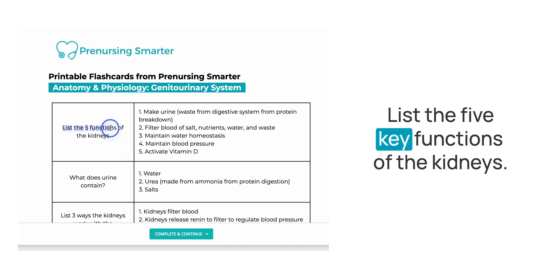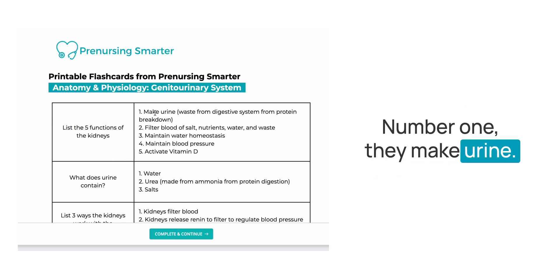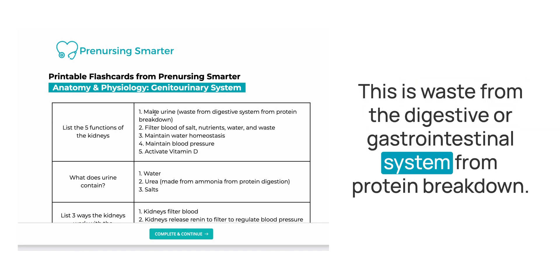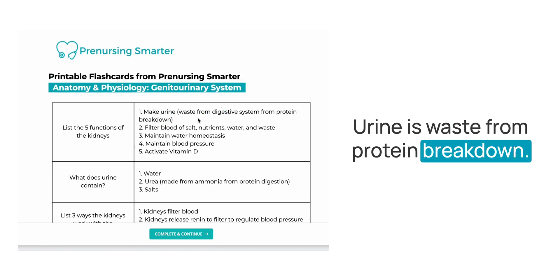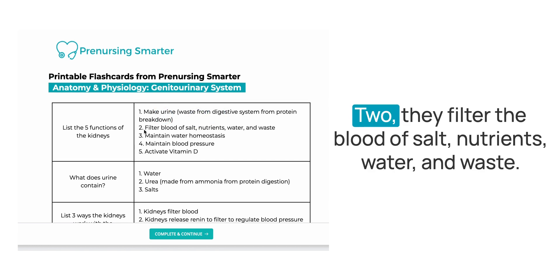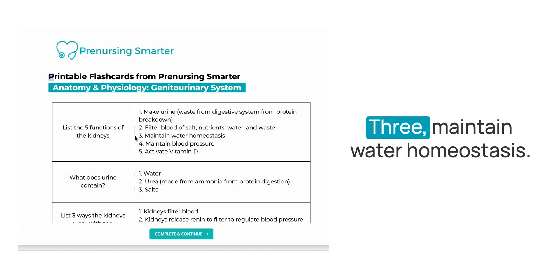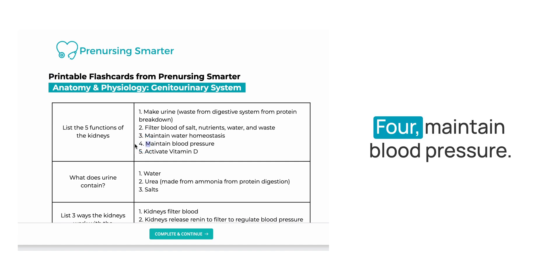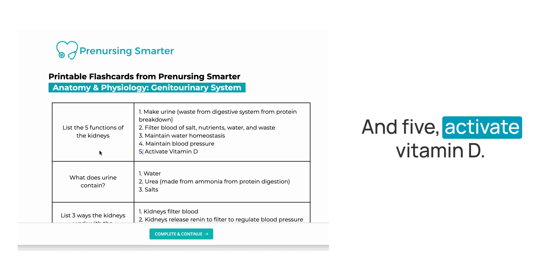List the five key functions of the kidneys. Number one, they make urine — this is waste from the digestive or gastrointestinal system from protein breakdown. Two, they filter the blood of salt, nutrients, water, and waste. Three, maintain water homeostasis. Four, maintain blood pressure. And five, activate vitamin D.